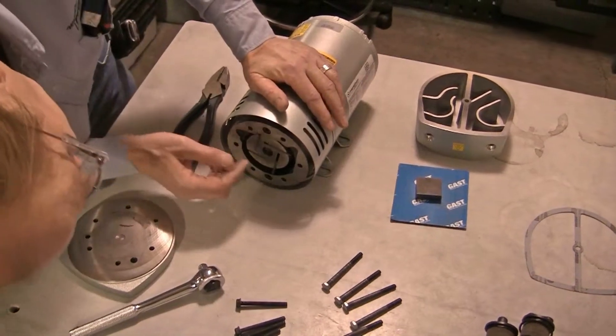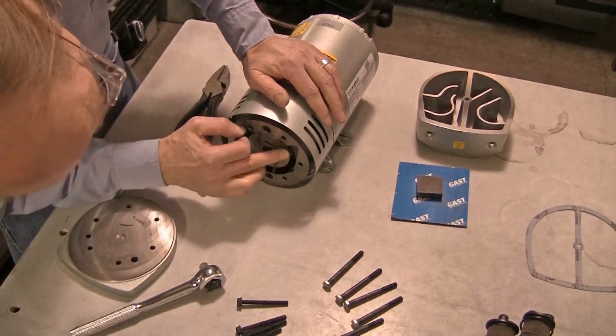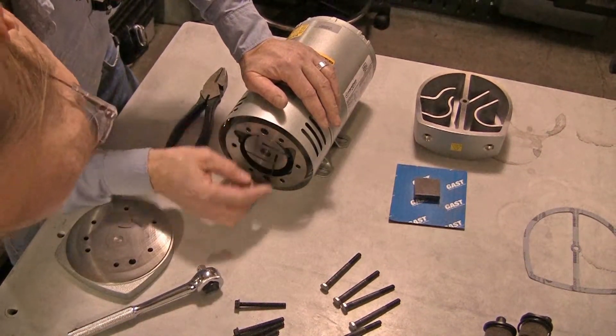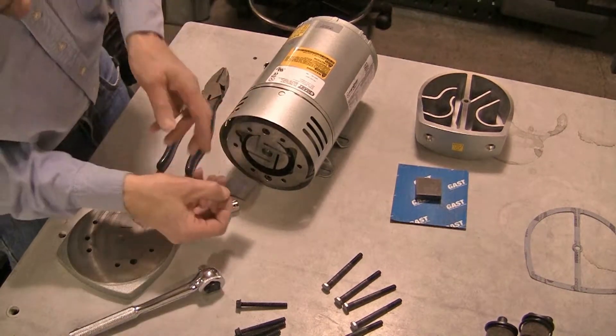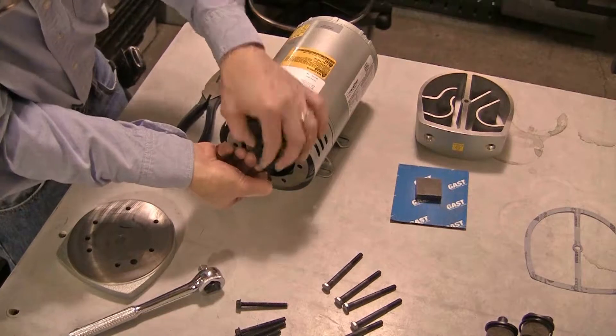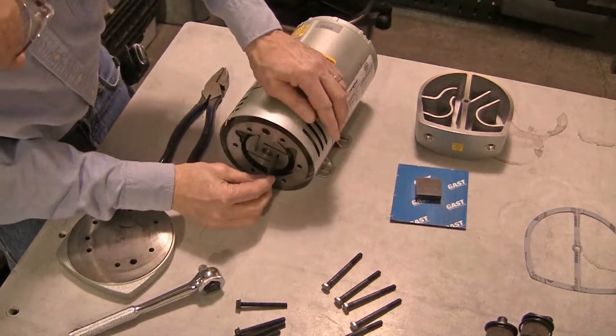Take note of the direction of the taper on the vanes and then remove the old vanes. If there are any rust deposits, these should be cleaned off. A fine sanding cloth or scotch brite pad will typically work for this.